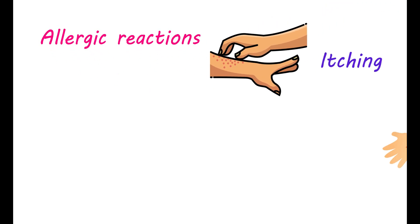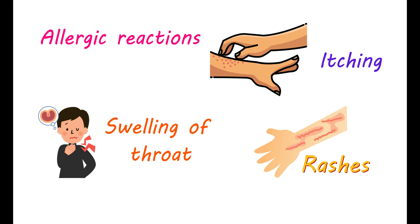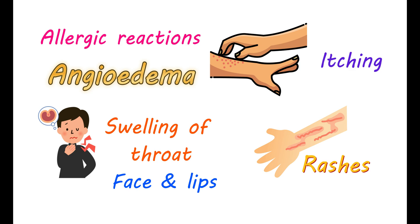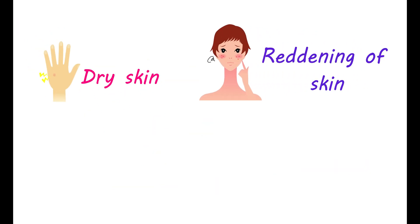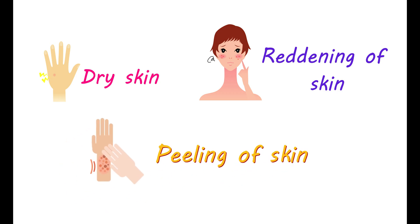Even though rare, Mupiracin may cause local allergic reactions. They involve severe itching, rashes, and swelling of the throat, face, and lips. This indicates a hypersensitive reaction causing angioedema, resulting in swelling and rashes. If you observe these symptoms — especially swelling of your face and lips — then immediately talk with your doctor. You can also have dry skin and reddening of skin. However, peeling of the skin may indicate a serious side effect.